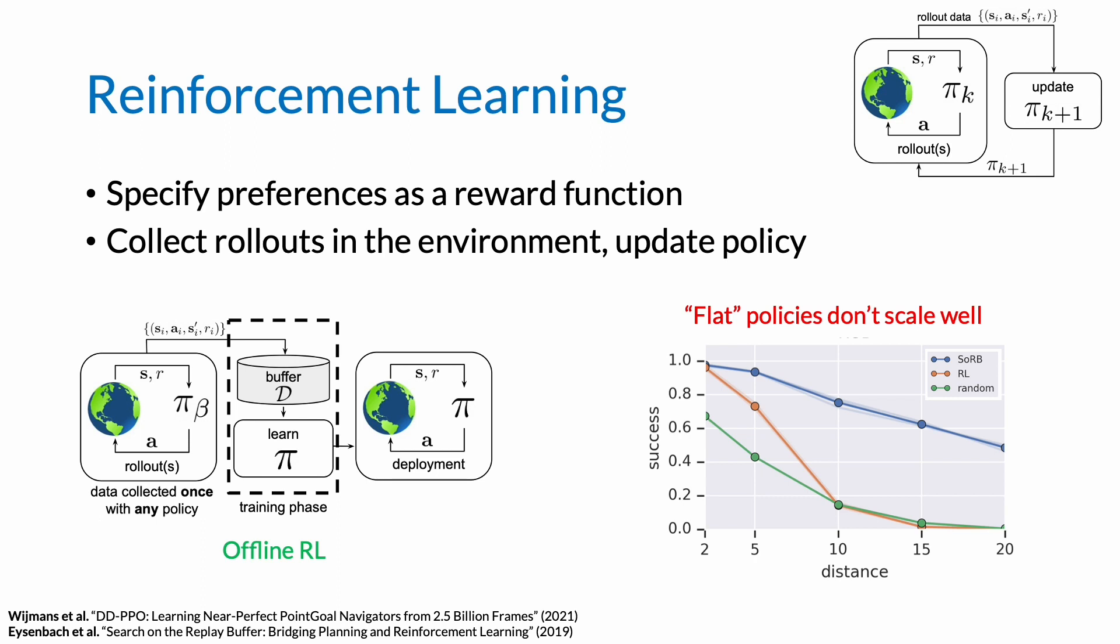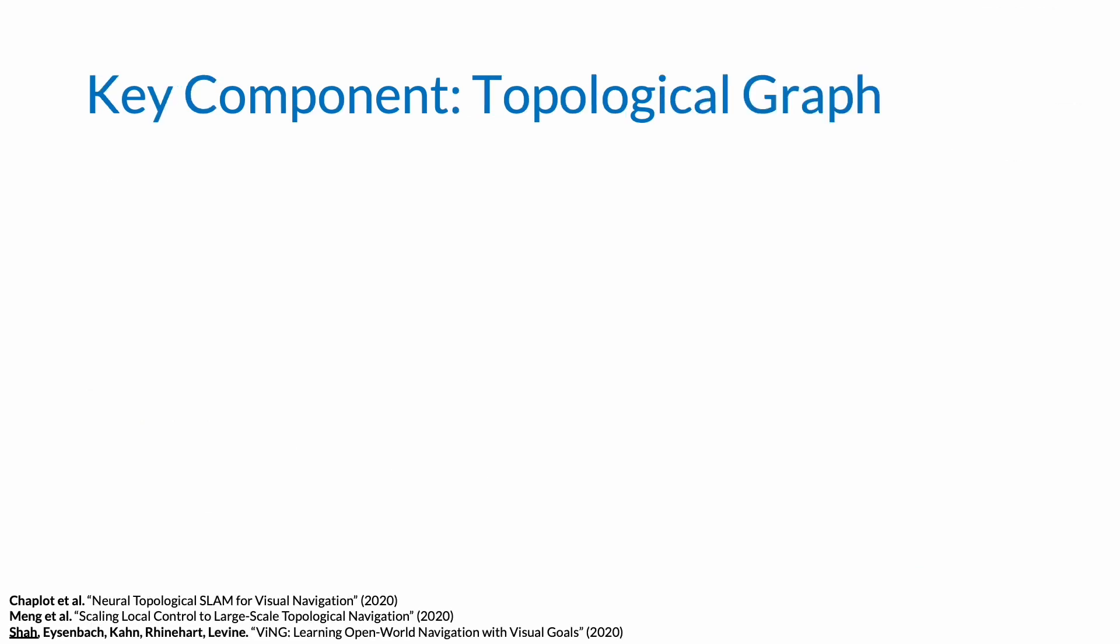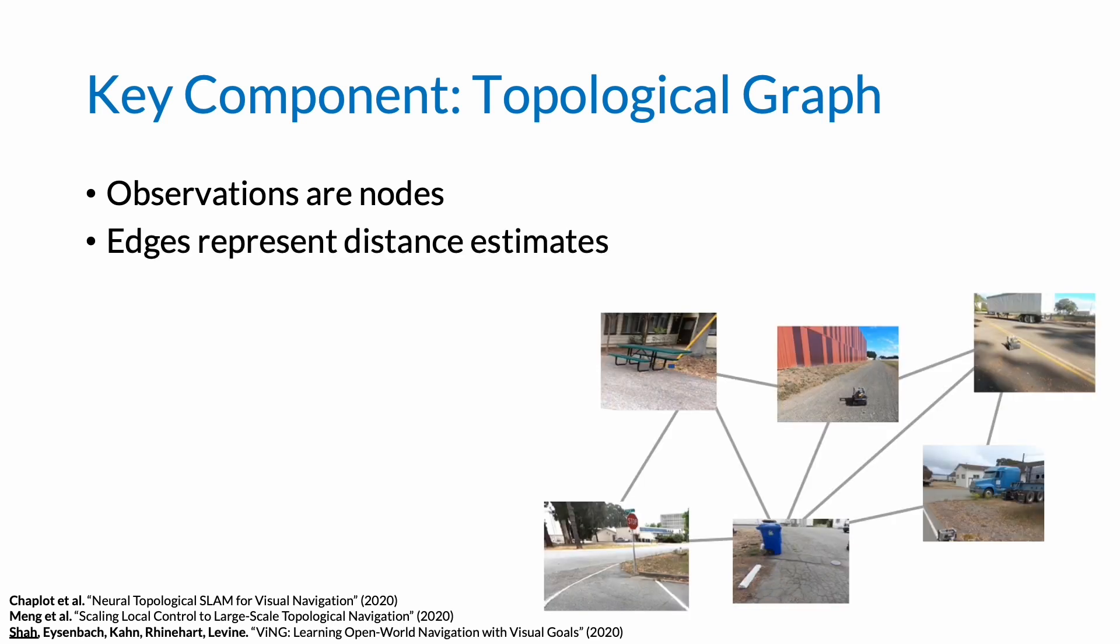To deal with issues like value propagation over long horizons, we use a topological graph in conjunction with goal-conditioned value functions. This topological graph contains nodes that represent the observations of the agent at different places in the environment and edges that represent connectivity given by the learned distance estimates. Such topological graphs have been successfully used by a plethora of prior works to enable learned policies to plan over long horizons.